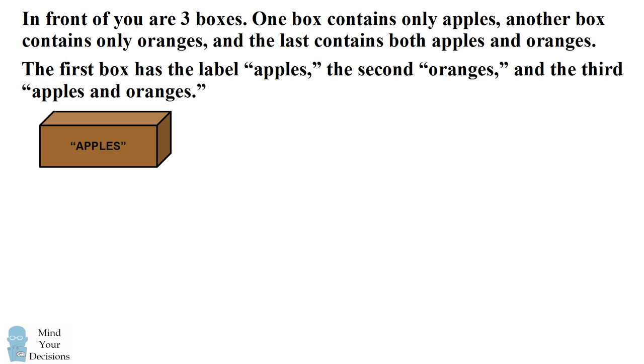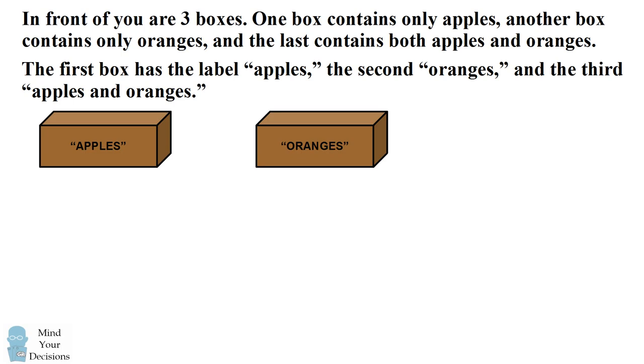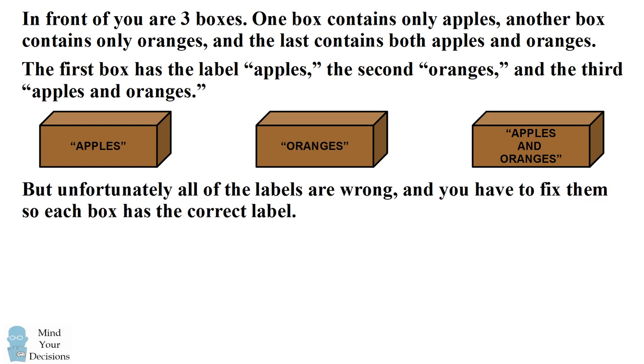The first box has the label apples, the second has the label oranges, and the third has the label apples and oranges. But unfortunately all of the labels are wrong, and you have to fix them so each box has the correct label.